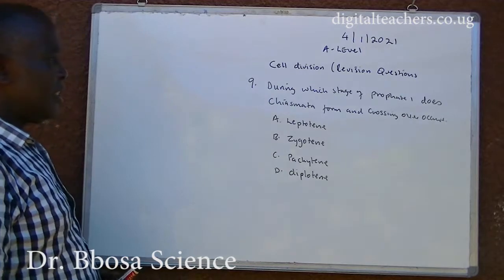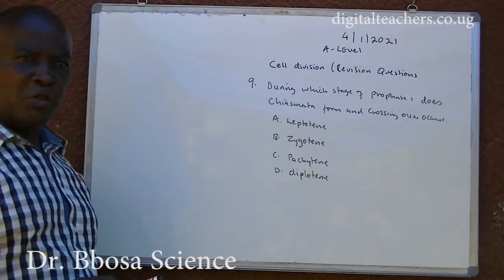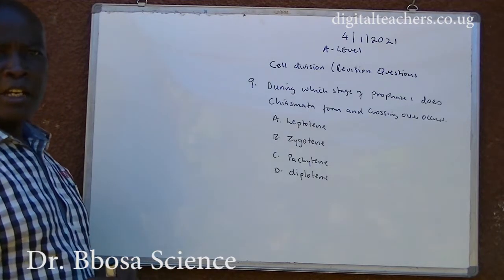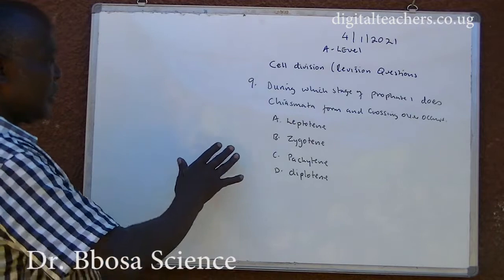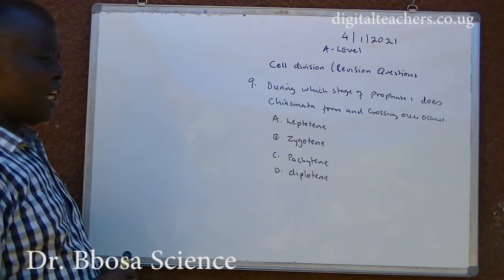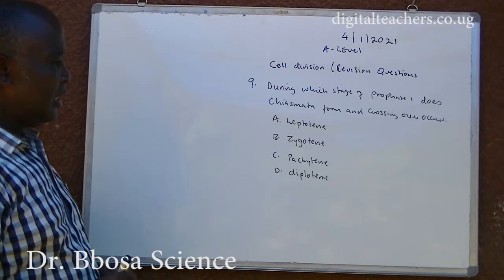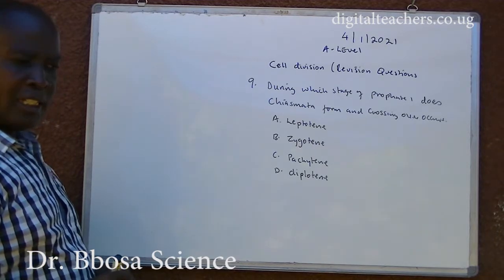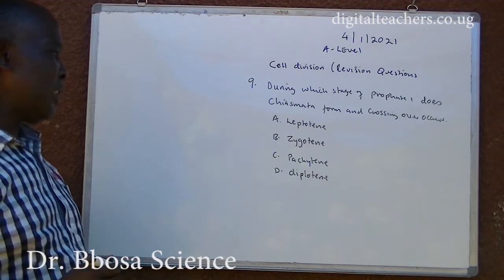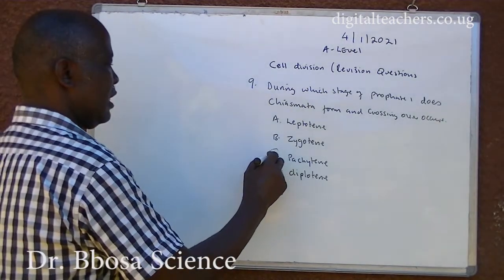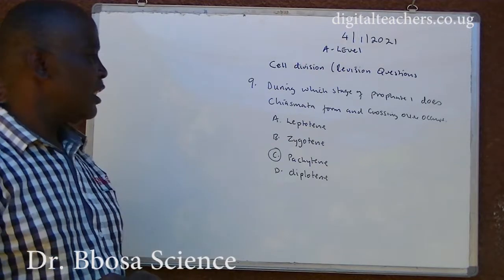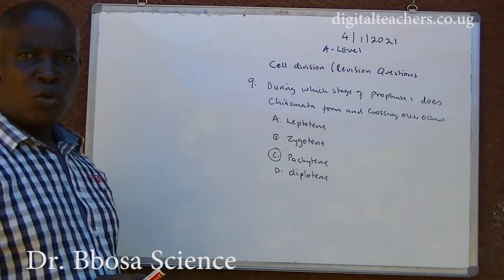Number 9. During which stage of prophase 1 do chiasmata form and crossing over occur? You can pause and answer. The answer is D, the third stage of prophase 1.